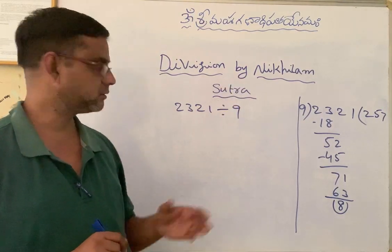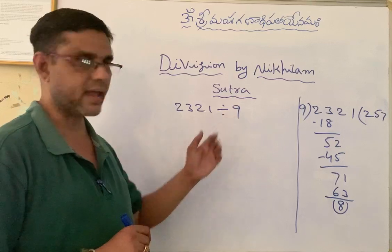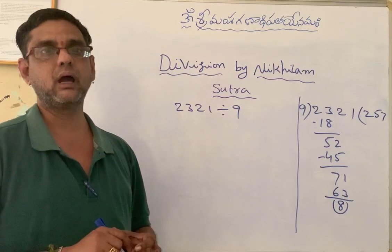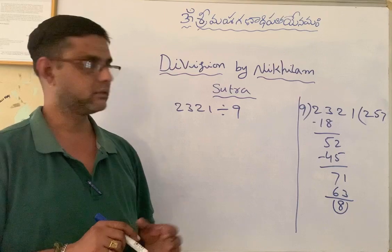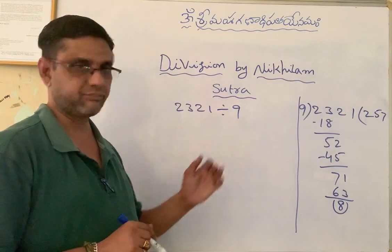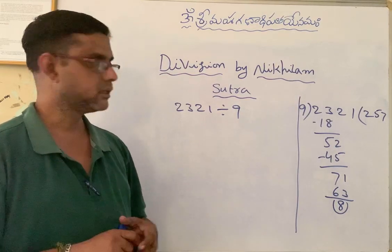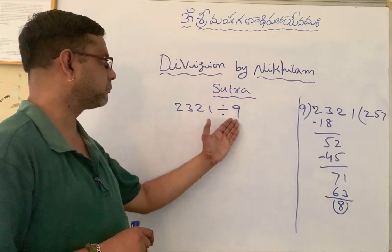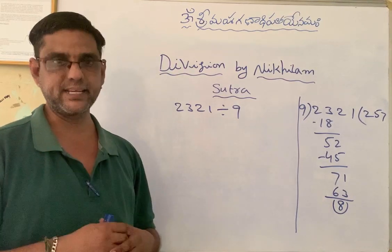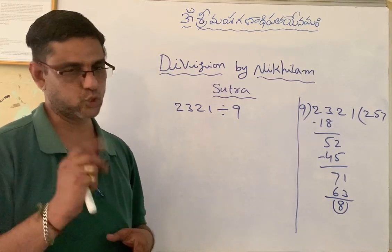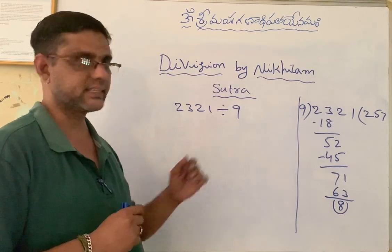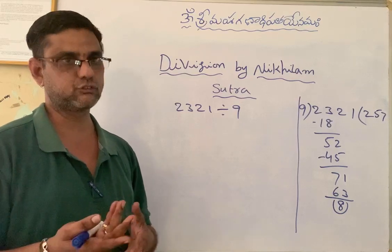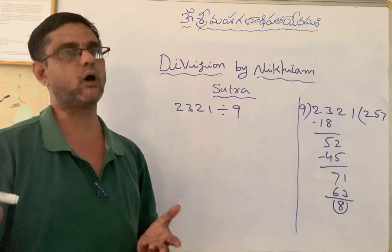Nikhilam means how much 9 is less than 10 — that number I will call it as Nikhilam. So Nikhilam of 9 is 1. Suppose when we are dividing a number with 8, Nikhilam of 8 is 2. When the divisor is 7, Nikhilam of 7 is 3, and so on.